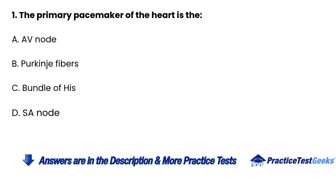1. The primary pacemaker of the heart is: A. AV node. B. Purkinje fibers. C. Bundle of His. D. SA node.